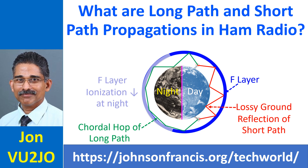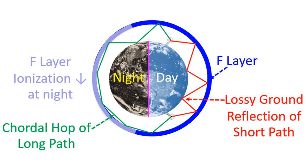Short path propagation is usually through the daytime zone of the globe. Long path is usually along the nighttime zone and can occur without too many ground reflections as in the case of short path. There are multiple chordal hops along the ionosphere, which is less lossy than ground reflection.